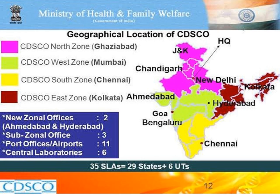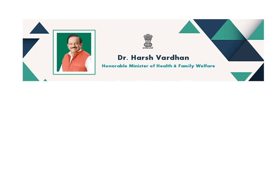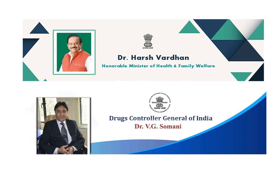Zonal offices are located at different places for different zones. The North Zone office is in Ghaziabad, the West Zone office is in Mumbai, the South Zone office is in Chennai, and the East Zone office is in Kolkata. The Honorable Minister of Health and Family Welfare is Dr. Harsh Vardhan, and the Drug Controller General of India is Dr. V.G. Somani.